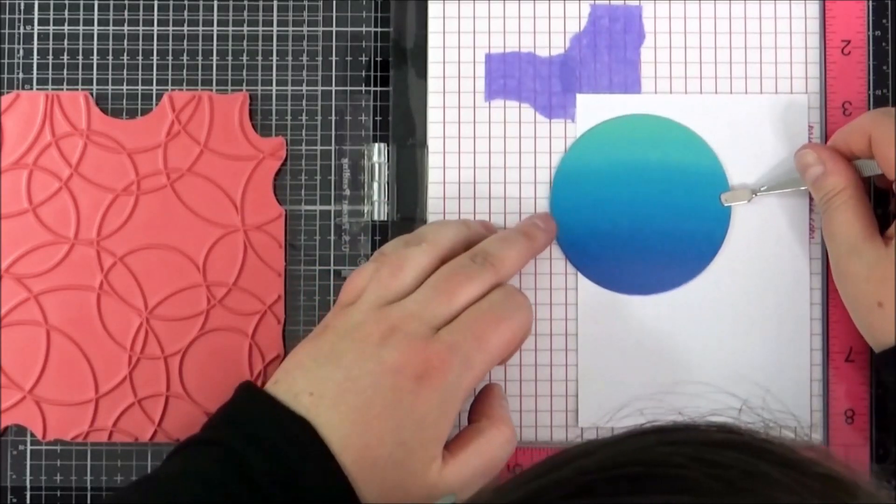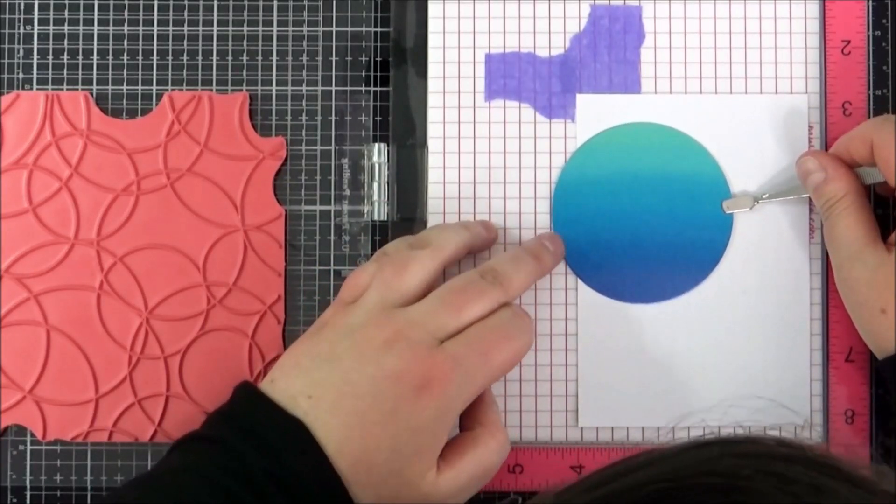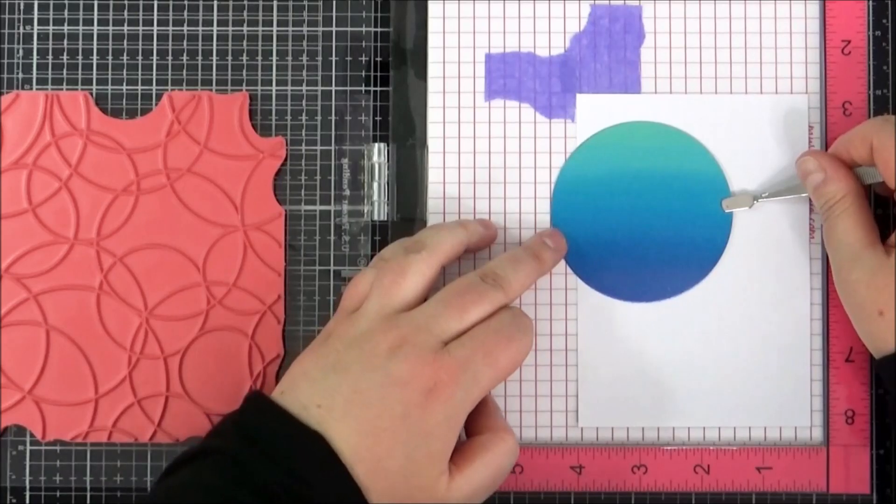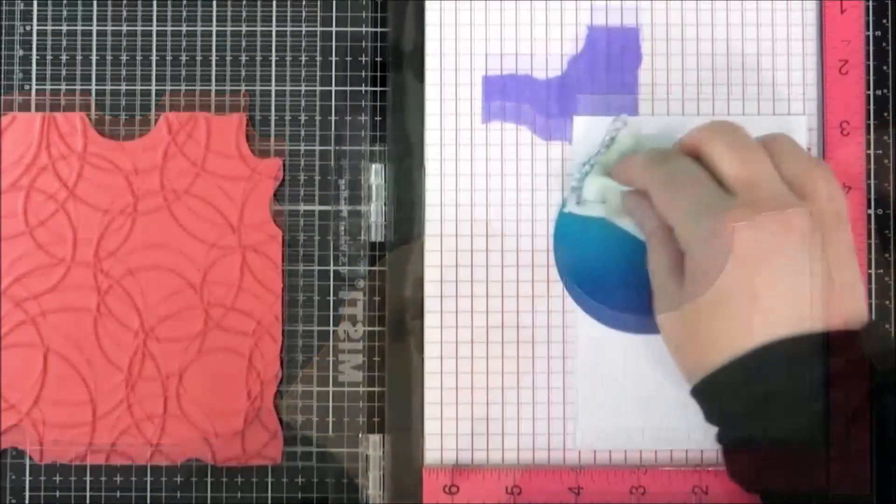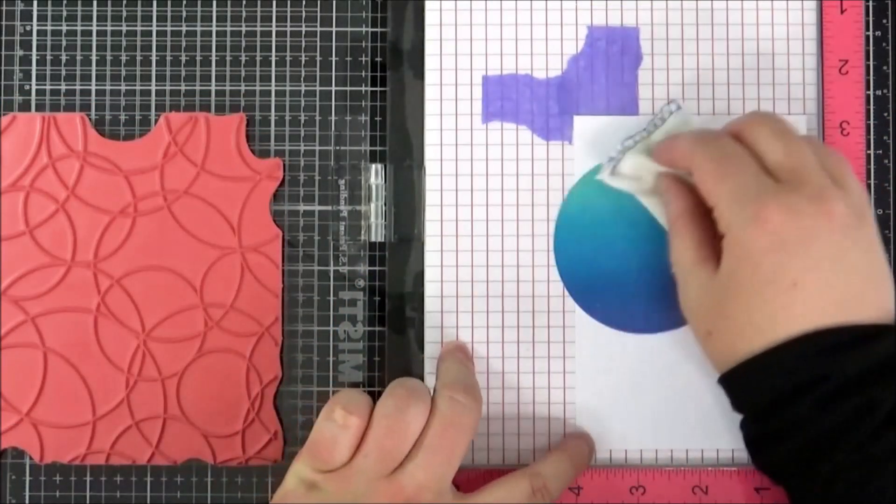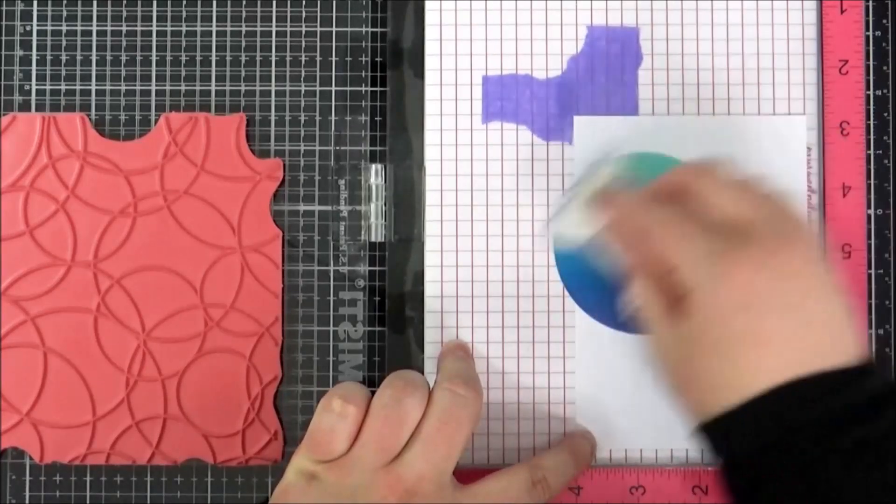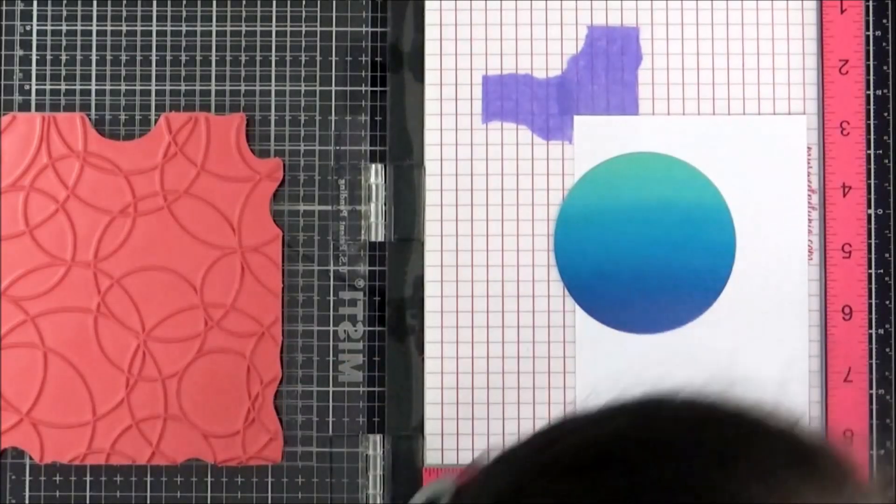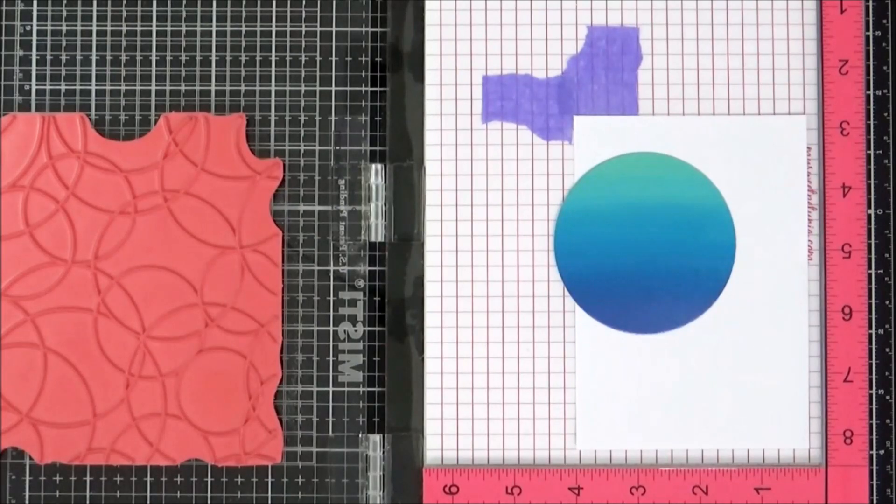I want the lines on this piece to line up with the lines on the background piece so it looks like one continuous pattern. That's where this spotlight technique comes in.